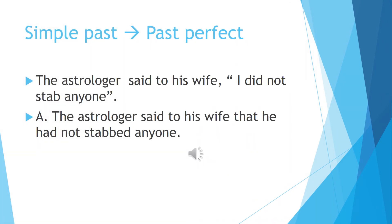Let us see another example where simple past changes to past perfect. The astrologer said to his wife, 'I did not stab anyone.' This is a direct speech. Let us change to indirect speech: The astrologer said to his wife that he had not stabbed anyone. This is a negative statement which was in the inverted commas, and only that statement has been changed from simple past to past perfect.